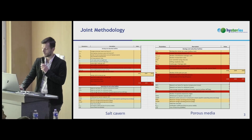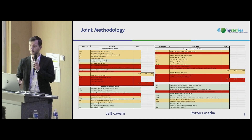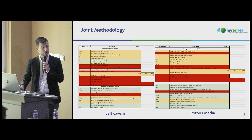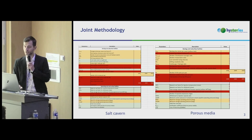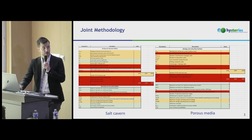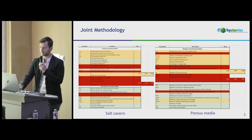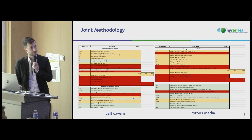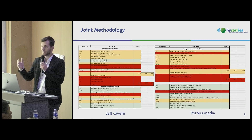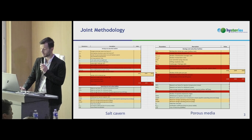Starting with the joint methodology, the toolbox was developed taking into account and implementing the cost model presented by Arno and provided by work package 7. The tool comprised different spreadsheets. What you see here is the spreadsheet we called 'summary,' where the full set of parameters useful to characterize a business case is presented. The user can freely choose number of wells, number of cycles, cost of electricity, and working gas volume.